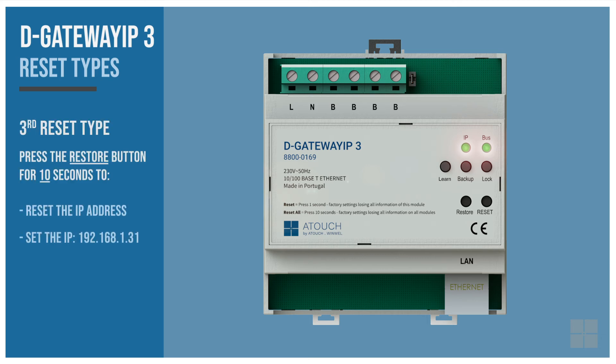Now, if you only want to reset the gateway IP address, press the restore button for 10 seconds. The gateway IP address comes back to its default: 192.168.1.31.